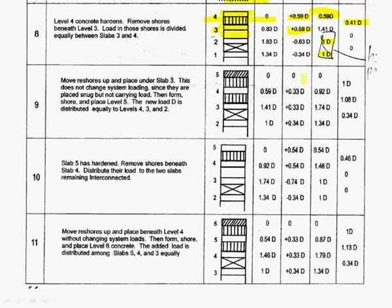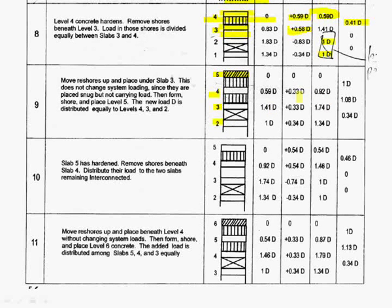Then we take the reshoring from the second floor and put it on the third floor — snub into the third floor — so nothing is going to change. Then we put on the fourth floor slab. The same thing: we allow slab 4, slab 3, and slab 2 to deflect, so all that weight is going to be distributed evenly among them. We update that and need to figure out the load on each floor of shoring.